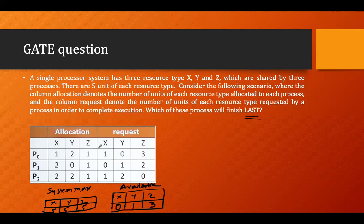With available (0,1,3), can I fulfill any request? For P0 it requires (1,0,3) — it requires one for X but I have zero, so P0 cannot be fulfilled. For P1 it requires (0,1,2) — zero X needed, one Y needed (I have one), two Z needed (I have three) — yes, I can proceed with P1.